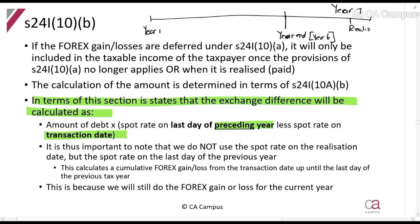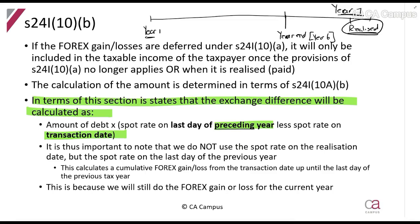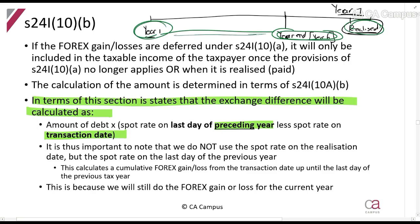Let's say in year one we took out a loan between connected persons involving foreign debt, so there are foreign gains and losses. We pay it in year seven — it's realized. They say you will not calculate any gains and losses during the period between year one and year six. But when it is realized in year seven, you will calculate using the spot rate at year six minus the spot rate at year one. That calculation takes into account all the forex gains and losses that took place during that deferred period.